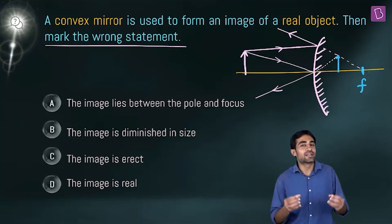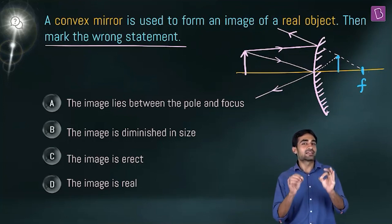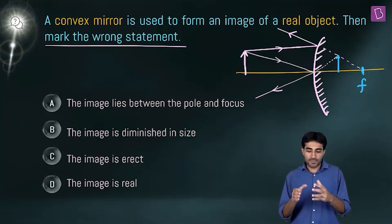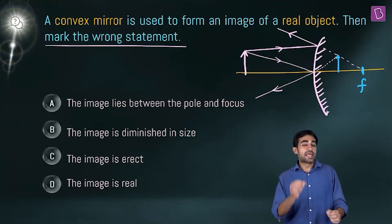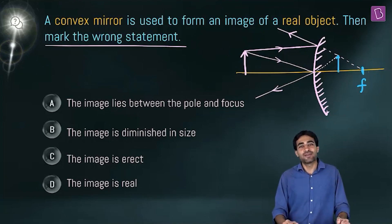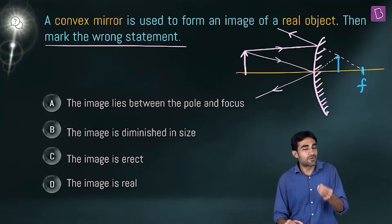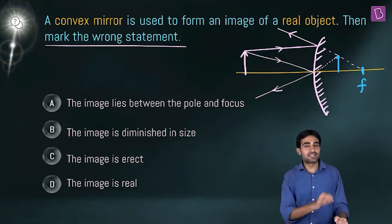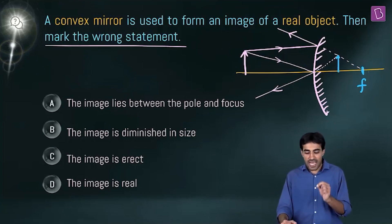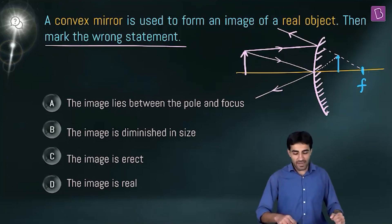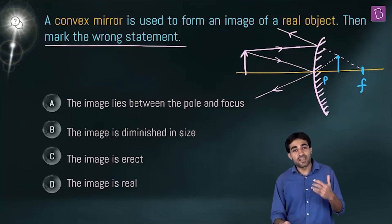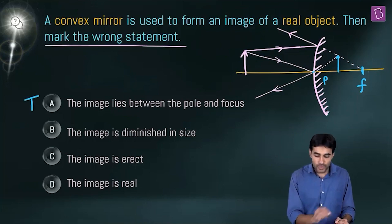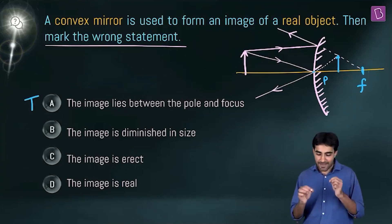At that particular point we get the image. The reflected light rays appear to diverge from this image, so this is a virtual image. Now let's check the options. Option A says the image lies between pole and focus — we can see our image is indeed lying between the pole and focus, so option A is true.